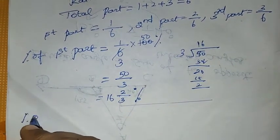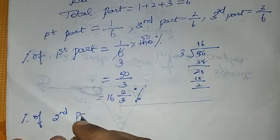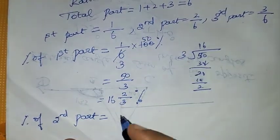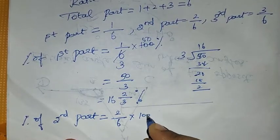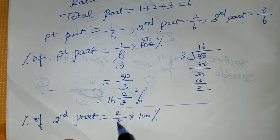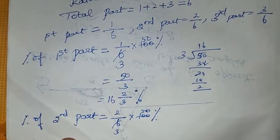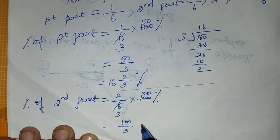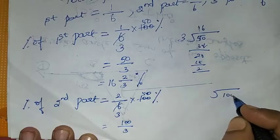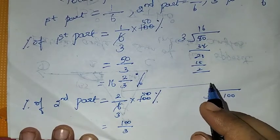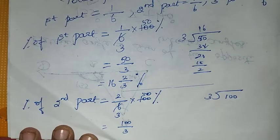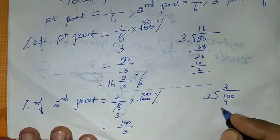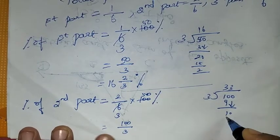For the second part, percentage of second part equals 2 by 6 times 100%. After canceling, 2 into 50 is 100, so 100 by 3 percentage. Converting to mixed fraction, that's 33 and 1 by 3 percentage.